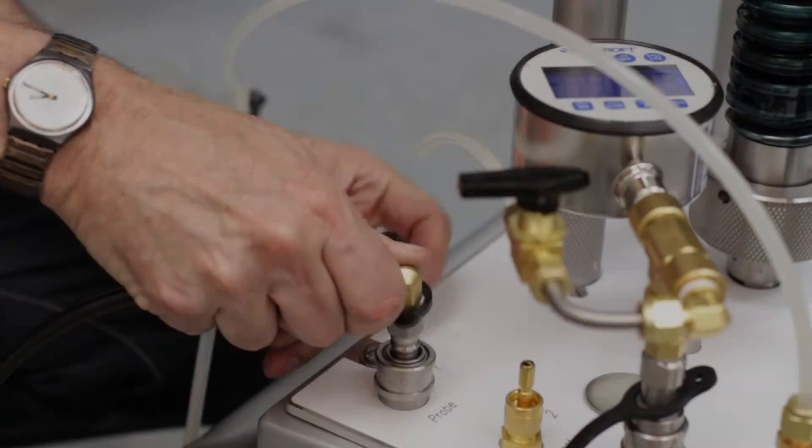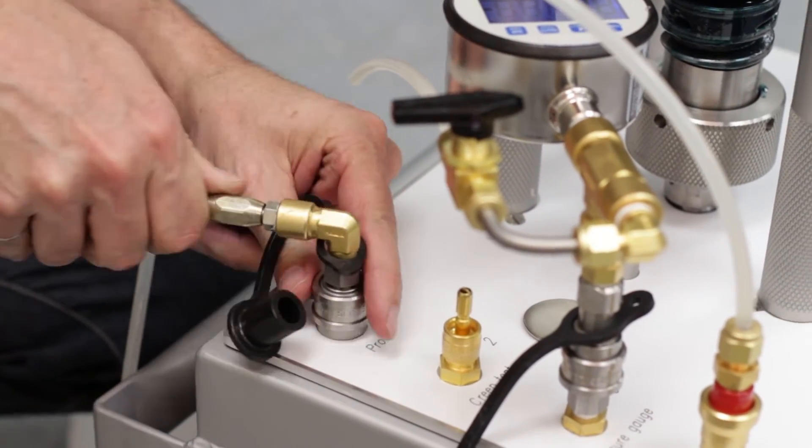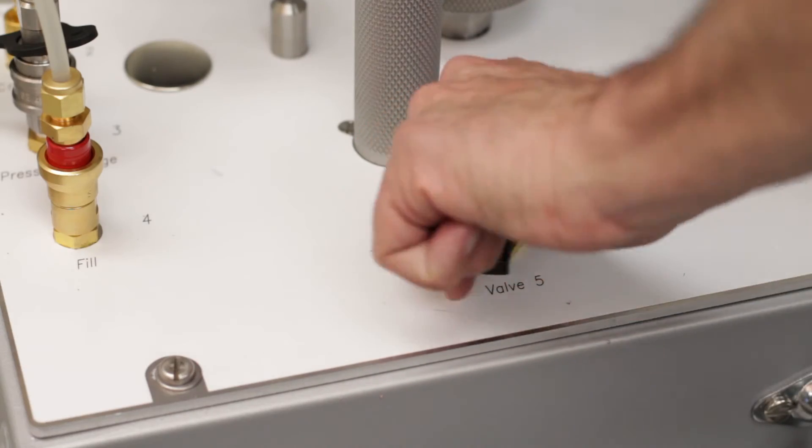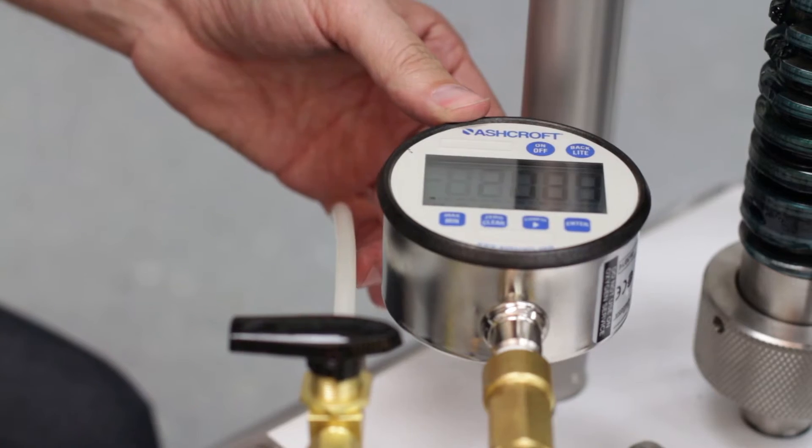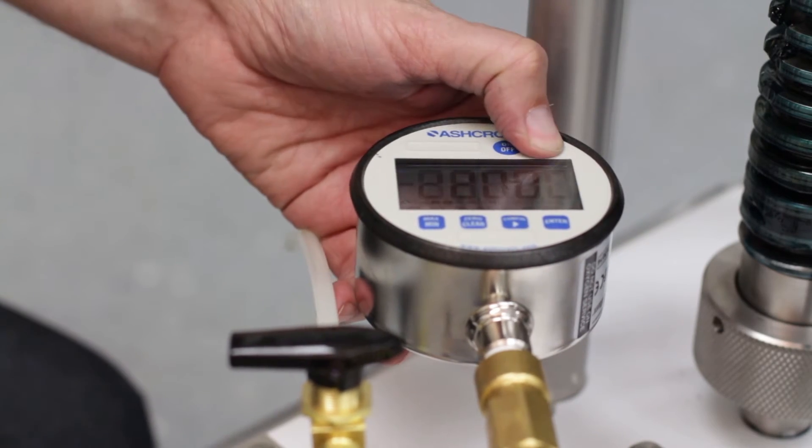Step number 1. Connect the Tecalan tubing to port number 1. Step number 2. Place valve number 5 on test. Connect the pressure gauge on port number 3 and turn it on.